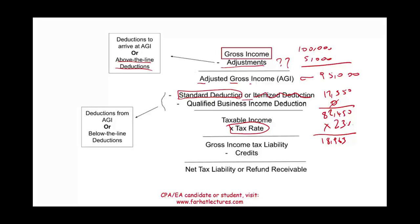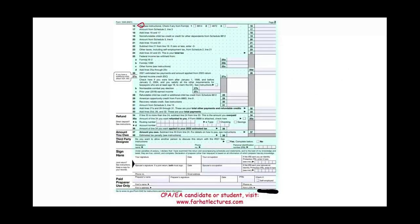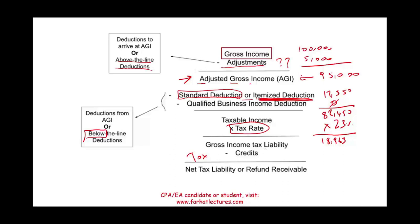This $18,963 is what you are responsible for unless you have tax credits. The standard deduction and itemized deductions are below-the-line deductions — below AGI. Now let's go to credits. You could have many credits: child tax credit, earned income credit, and so on — we'll have separate recordings about these. The good thing about credits is they reduce your tax dollar for dollar. Let's assume you have $2,000 in tax credits — that reduces your taxes by $2,000, leaving you responsible for $16,963.